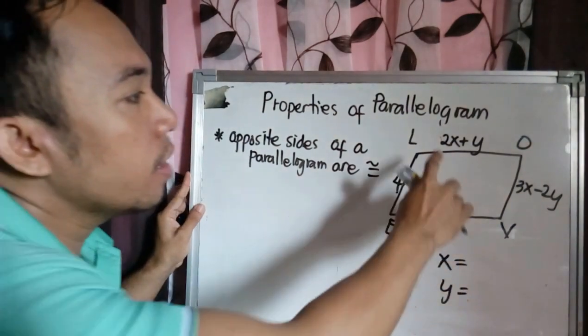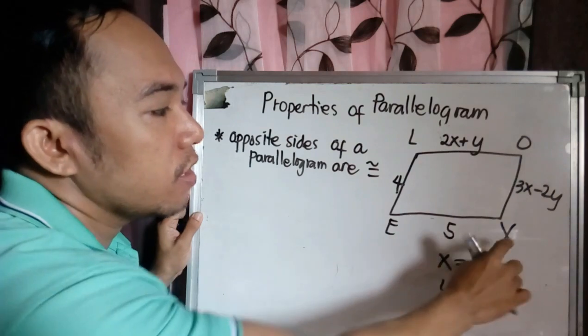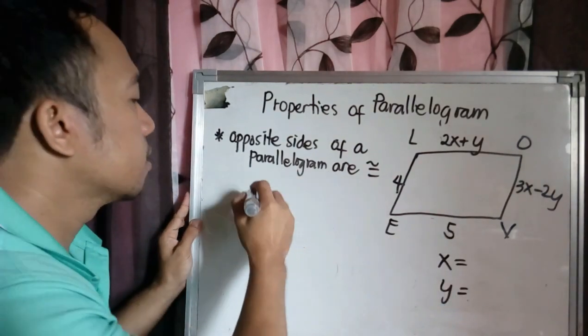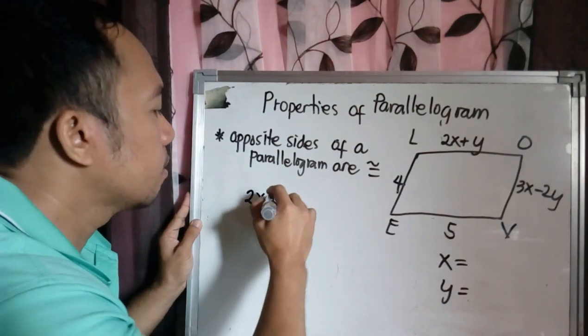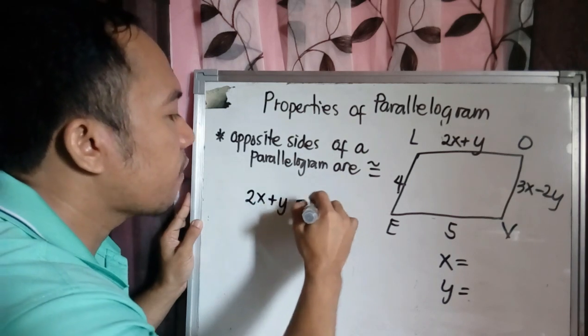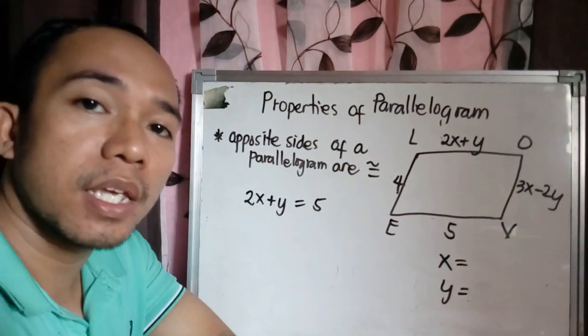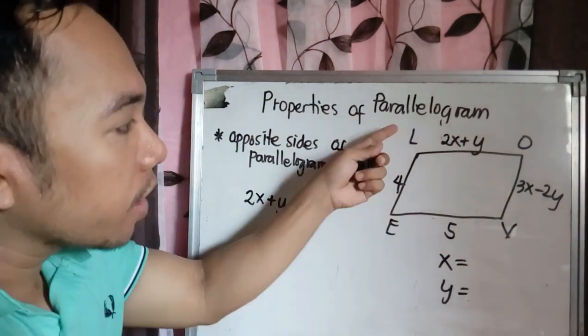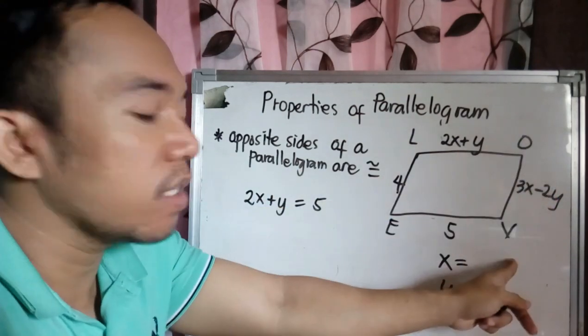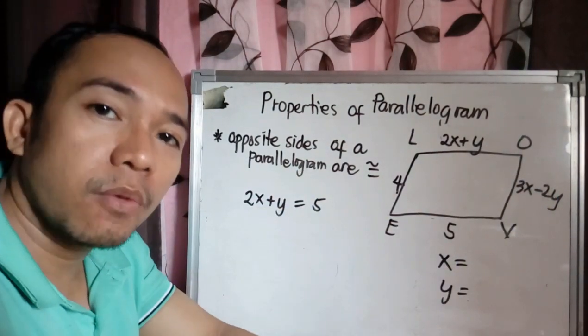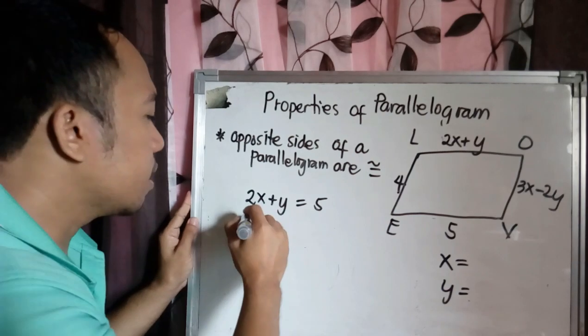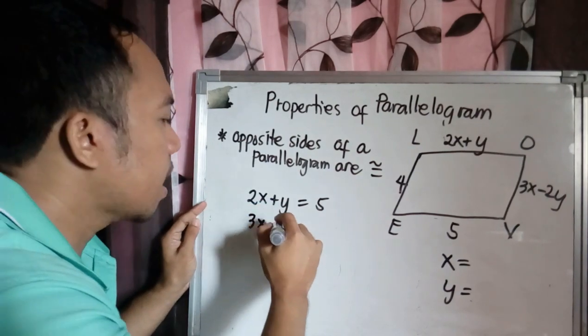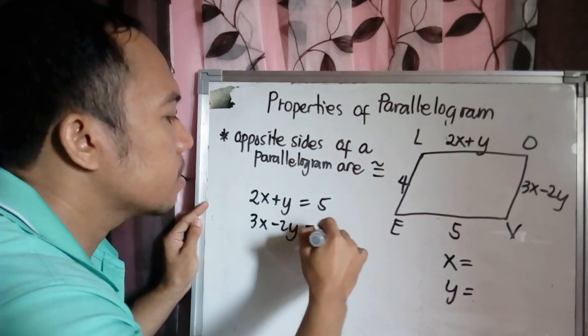So our LO is opposite to EV, therefore they are equal. So 2X plus Y equals 5. So this is our first equation. And our LE opposite to OV, they are equal also. So we have 3X minus 2Y equals 4.